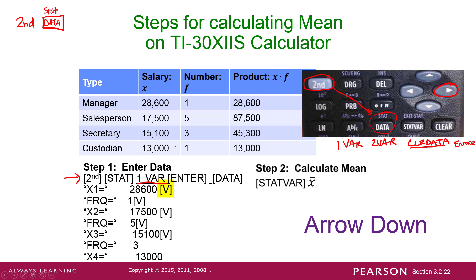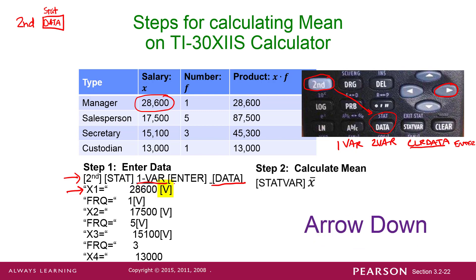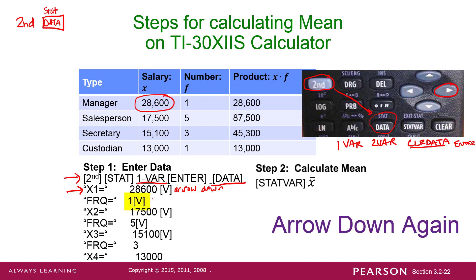Okay, so after you hit One Var and Enter, the screen goes blank. Then you have to hit the Data button — just Data. When you hit Data, you see on your screen 'X1 equals,' which is asking you for the first data value. So what's the first data value here? 28,600. Now, the little arrow I have next to the 28,600 means arrow down. So now you're going to arrow down, and it asks you for the frequency — how many times is 28,600 on the list. It's there one time, and automatically the calculator will have a 1 there. So all you have to do is just arrow down again.